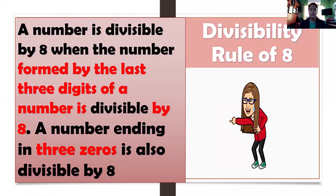Let's go now to the divisibility rule of 8. A number is divisible by 8 when the number formed by the last three digits of a number is divisible by 8. And a number ending in three zeros is also divisible by 8. So we have to remember that.